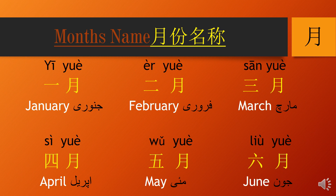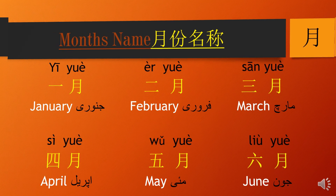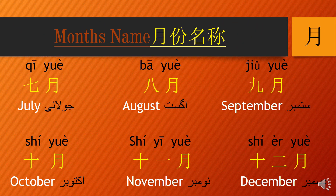Wu yue, wu yue — paanchwa mahina — May. Liu yue, liu yue — June — chatha mahina. Qi yue, ju yue — July — saatwa mahina. Yue yue — August — aathwa mahina. Jiu yue, jiu yue — September — nauwa mahina. 十月, 十月 — October — daswa mahina.